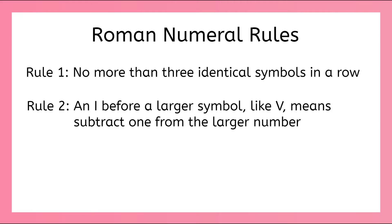Before we finish counting to 10, let's review our two rules. Rule 1 says we can't put more than 3 identical symbols in a row — that's why when we're writing 4, we can't write it as four I's. Rule 2 says anytime we put an I in front of a bigger symbol like V, it means we subtract 1 from the bigger number.